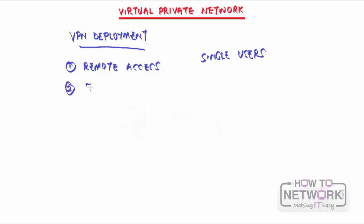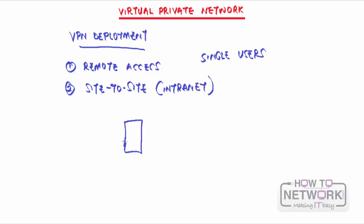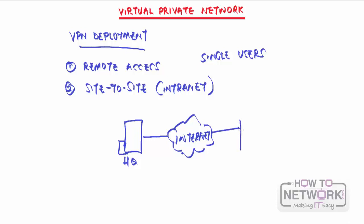The second type of deployment is site-to-site, also known as intranet. This is where a branch wants to connect to the HQ. So you have your HQ and your branch, both connected to the internet — and note that they don't have to be connected through the same ISP; they just each need a connection to the internet somehow. Site-to-site allows you to connect different offices of the same organization to each other, usually over a shared infrastructure like the internet.